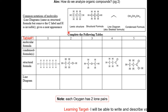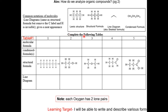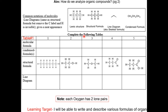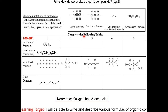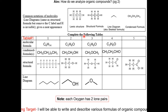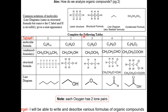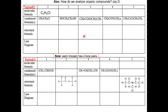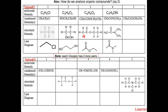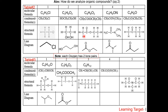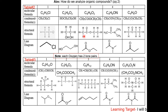For the last practice, complete tables one, two, and three in your packet. Try to do it yourself; once you've finished, check the answers on the PowerPoint. Here are the answers for table two and table three. This concludes the video lesson. Remember to do the Junipod homework. Thank you.